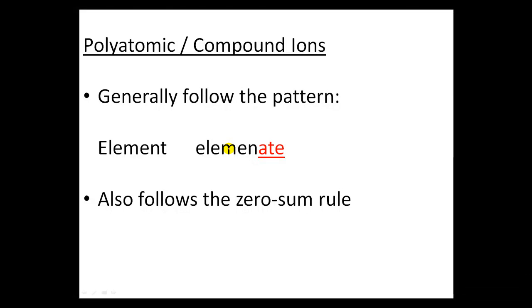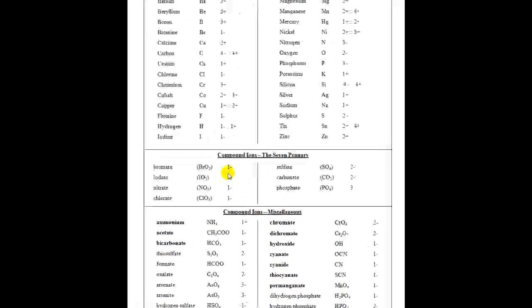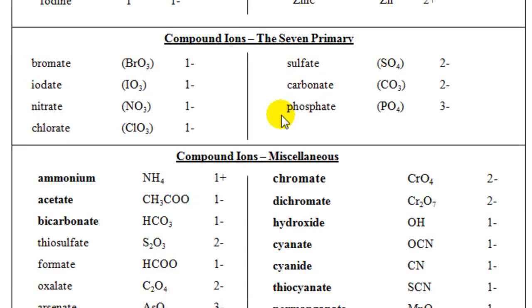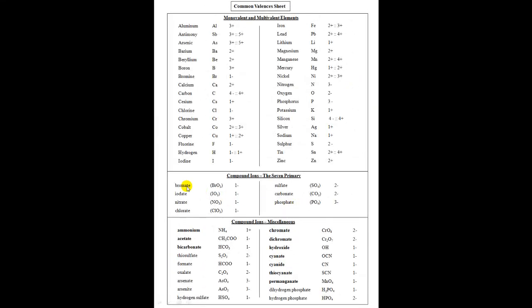When naming these polyatomic ions, they generally follow this pattern: element, elementate. The element — the metal — does not change its name. For the elementate, by looking at the compound ion names, you'll notice that all of them end with -ATE: bromate, iodate, nitrate, chlorate, sulfate, carbonate, phosphate. As soon as you see an -ATE, you know you should look down in the compound ion section, not up in the single elements section.